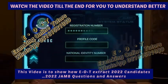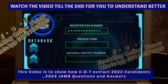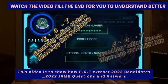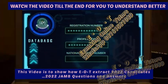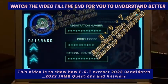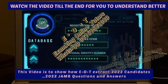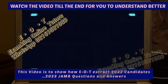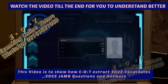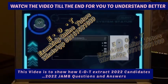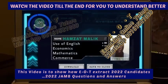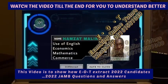Once the private password has been verified and is correct, it will show where to input the candidate details: the registration number, profile code, and the national identity number. Once we input all the details, it will show the full candidate profile, such as their name, first subject, and profile picture. Then it will proceed to the downloading aspect.